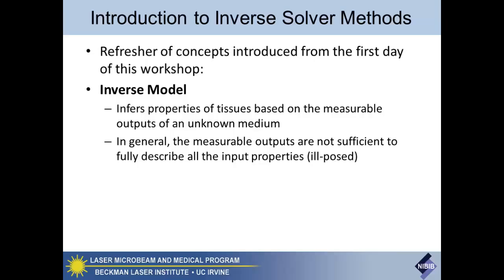Most measurable outputs are not sufficient to fully describe all the different things within the tissue. This is what people in the field of tomography refer to as an ill-posed problem. The complexity within the tissue — the parameters you'd use in your forward model — are not uniquely described by what you get out of it. We can be really good at describing what would happen to light, but when we measure light, what we're not as good at is understanding what happened when it was actually interacting with the tissue itself.